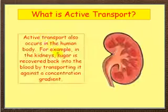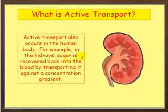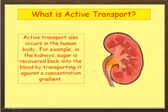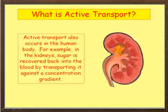This also occurs in the human body. For example, in kidneys — this will come on in a later video — you recover sugar from the blood by transporting it against a concentration gradient. You don't want sugar being released into the urine, so all the sugar is being recovered by active transport against a concentration gradient back into the blood.